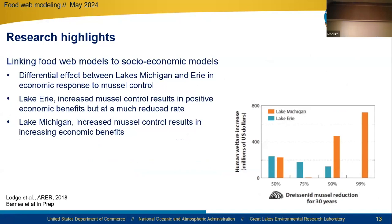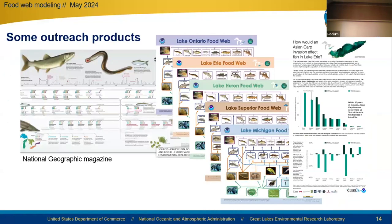Our last example highlights a linked food web model with a social-economic model to evaluate how regional economies might change during various dreissenid mussel reduction scenarios. What we found was a different effect between Lake Michigan and Lake Erie in economic response to mussel control. For Lake Erie, increased mussel control resulted in positive economic benefits but at a much reduced rate with increased mussel reduction. For Lake Michigan, increased mussel control resulted in increasing economic benefits.